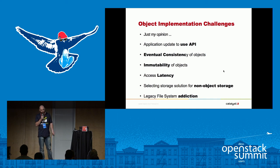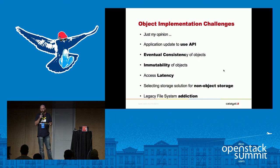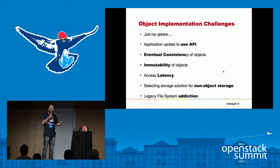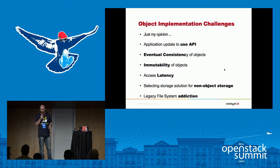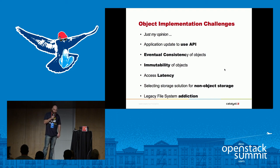Immutable objects — objects can't change, you have to create and delete them. There's access latency; it's not always fast to push objects in and out compared to writing to a file system. Once you decide what is a good use of object storage, you need to understand what you're going to do with the pieces of your file system workload that don't fit that model — whether you're going to use Redis, a queue, or some in-memory storage. Understanding what your options are and how that needs to be architected is very much not a solved problem, but there are so many tools in the open source space that allow you to do amazing things. The last challenge is legacy file system addiction — just being stuck on it as the way things should be.